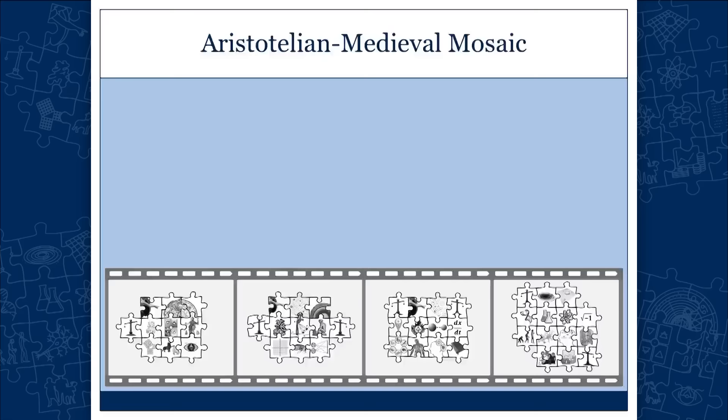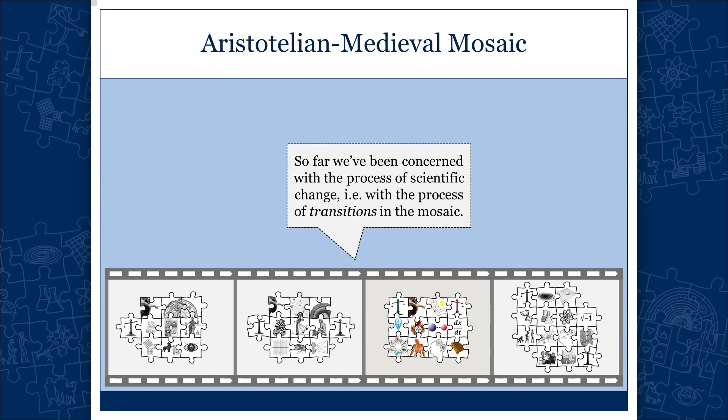What's going to happen now? So far we've been focused on the philosophy of science, basically on the transitions in the mosaic. We've been studying the transitions and the logic in transitions. What's the logic of scientific change? Whether there is a universal scientific method? Can we know anything for certain? What's the difference between science and pseudoscience? All these things.